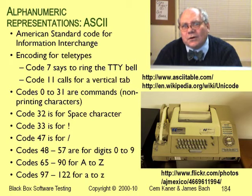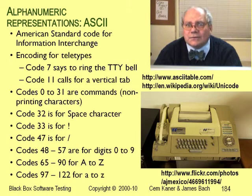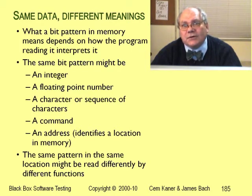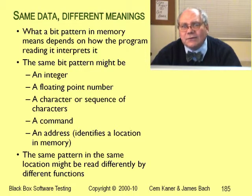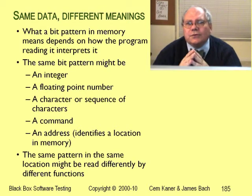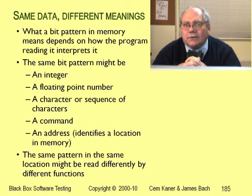These days, a lot of people use Unicode instead of ASCII. Unicode stores characters in 16 bits and it handles a lot of different languages. When a program reads a 32-bit word from memory, it interprets those bits — it might interpret them as an integer, a floating point number, a sequence of letters, or some other way. There's no way to tell from looking at a 32-bit pattern what type of data was stored in it — all we can see are 32 ones and zeros.